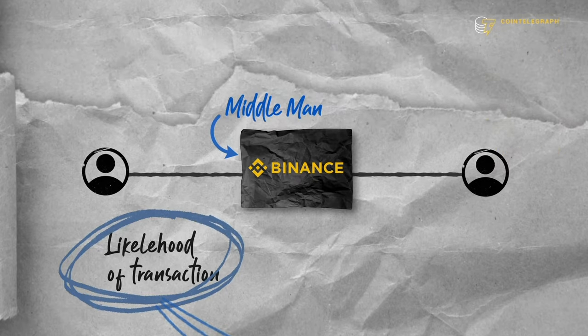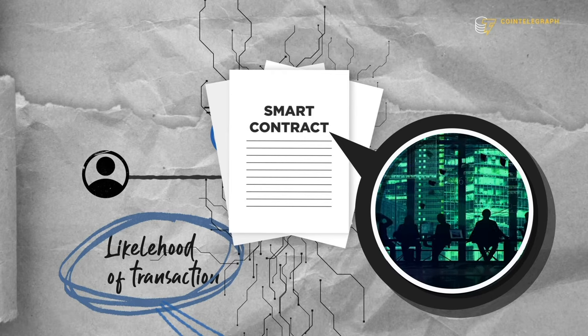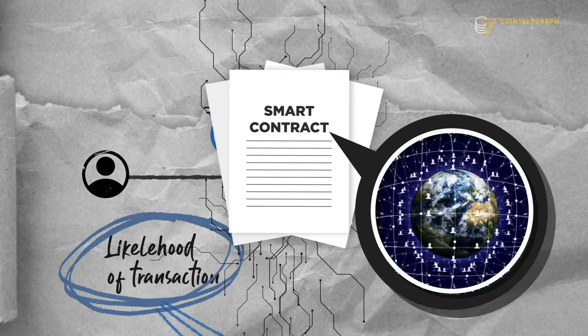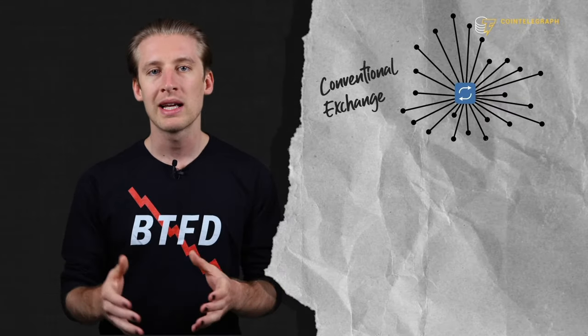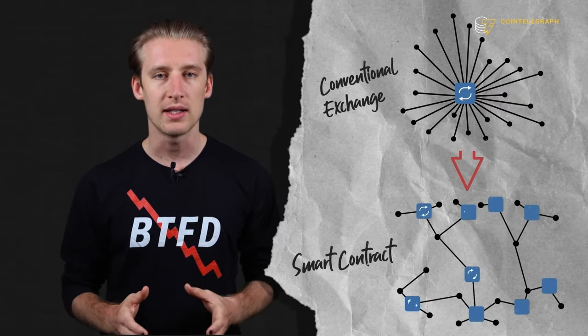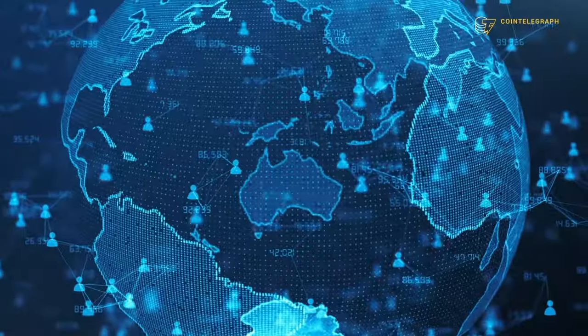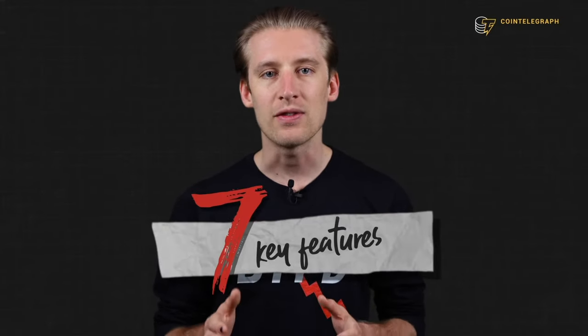Smart contracts eliminate the need for a middleman because instead of being run on a company server, they're run on a decentralized blockchain network. This increases the likelihood of a smart contract executing because the network is not controlled by a single entity. Blockchain networks are instead maintained by anonymous nodes spread out all over the world. This important distinction gives smart contracts seven key features.